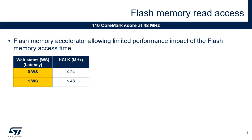The flash memory has a fixed access time, while the AHB bus frequency can be dynamically changed. That's why the number of wait states is programmable and has to be set according to the actual AHB frequency, called HCLK. Software is in charge of adjusting the number of wait states according to the HCLK frequency. Increasing the number of wait states must be done prior to increasing the frequency. Decreasing the number of wait states must be done after having decreased the frequency.